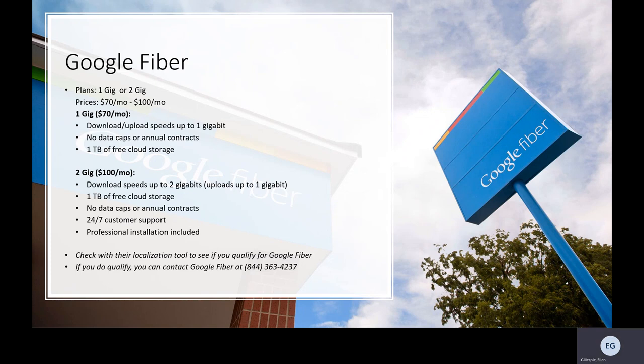As stated previously, there are no annual contracts with Google Fiber, but they do change their prices from time to time and will notify you of any changes 30 days before your first changed bill. To find out if you qualify for Google Fiber, you can use their localization tool to see if services are available in your area — we'll provide a link in the description box below. If you do qualify, you can contact Google Fiber at 844-363-4237.